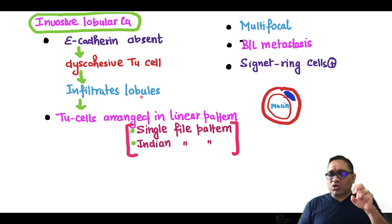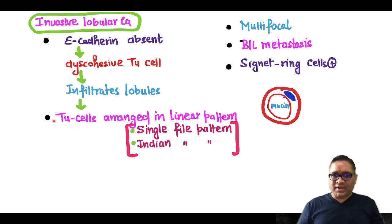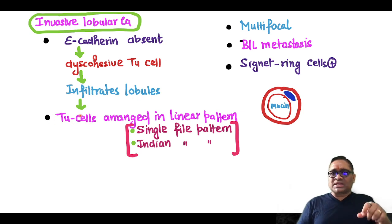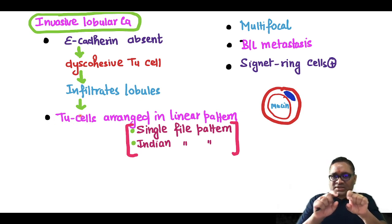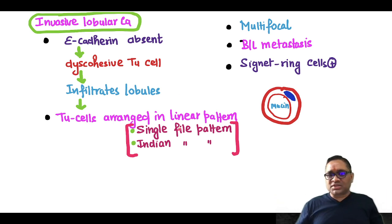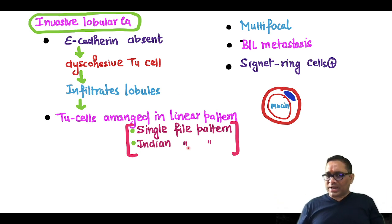They will infiltrate the lobules which contain collagen, and there you can see the tumor cells are arranged in a single line or linear pattern. This is called single file pattern or Indian file pattern.